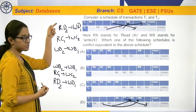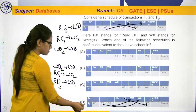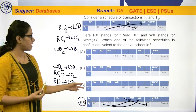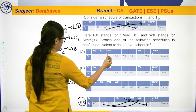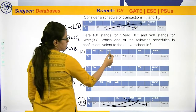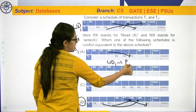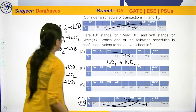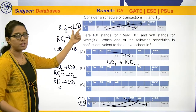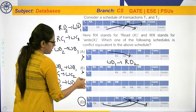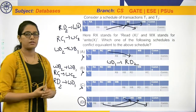All the conflicts which are there in the given schedule are the same here. Therefore, the correct option is option D. You can cross-verify the remaining options similarly. For another option, Wd and Rd means Wd of T1 followed by Rd of T2 — but our required order is Rd of T2 followed by Wd of T1. So we can say that all the other options are not conflict equivalent. Only option D is the correct answer.